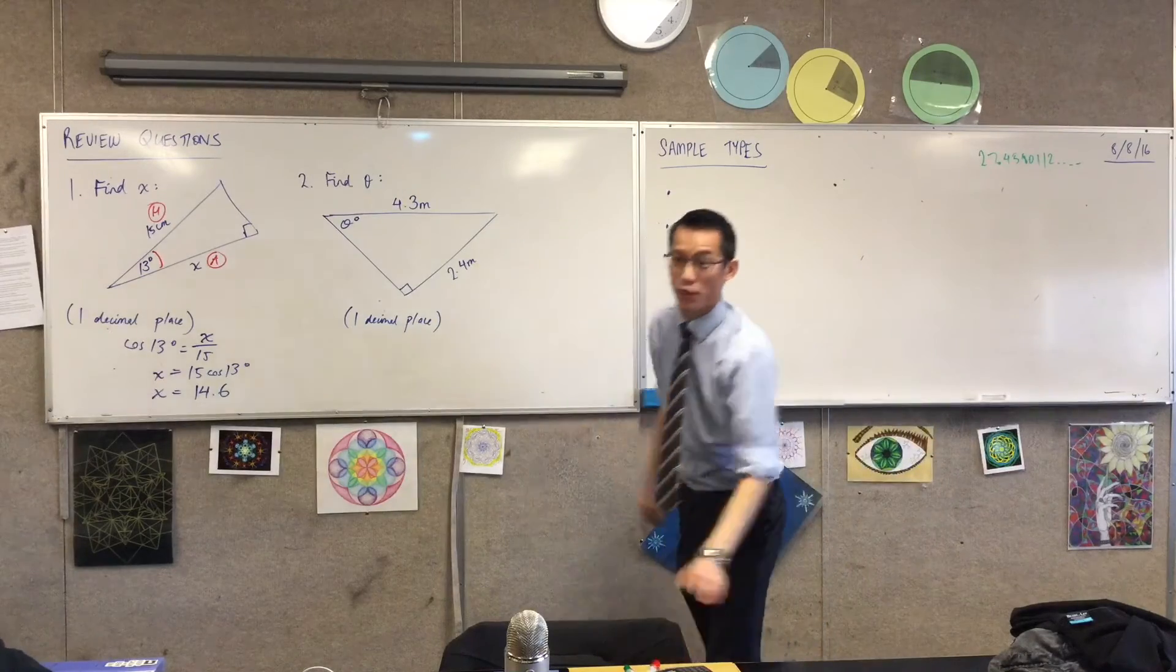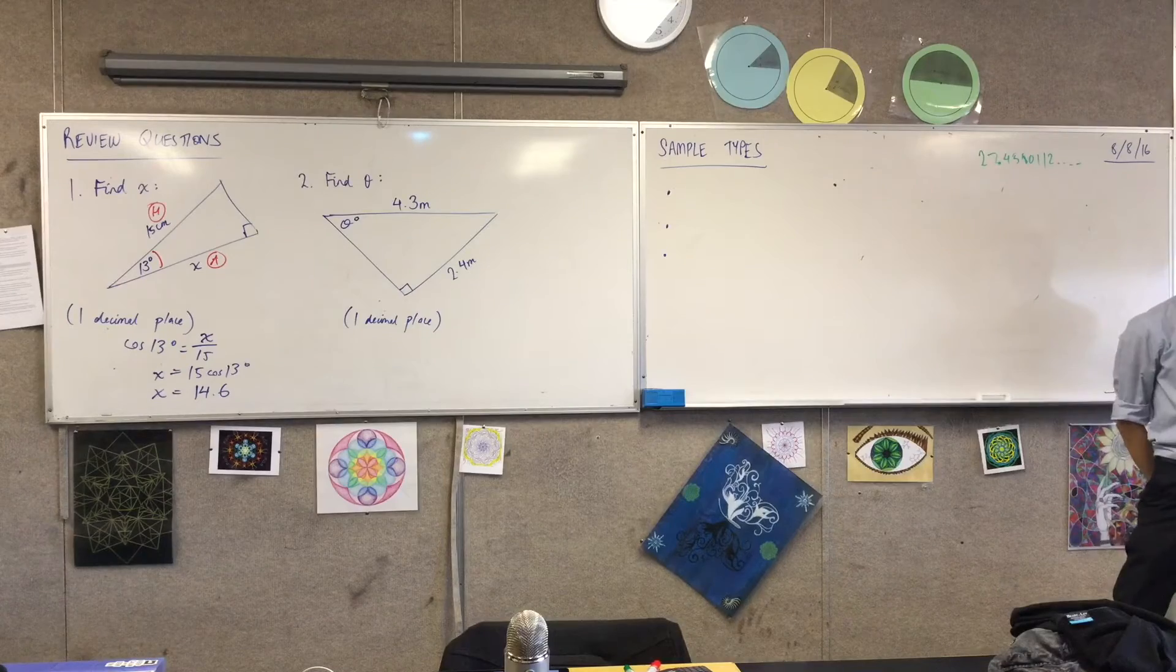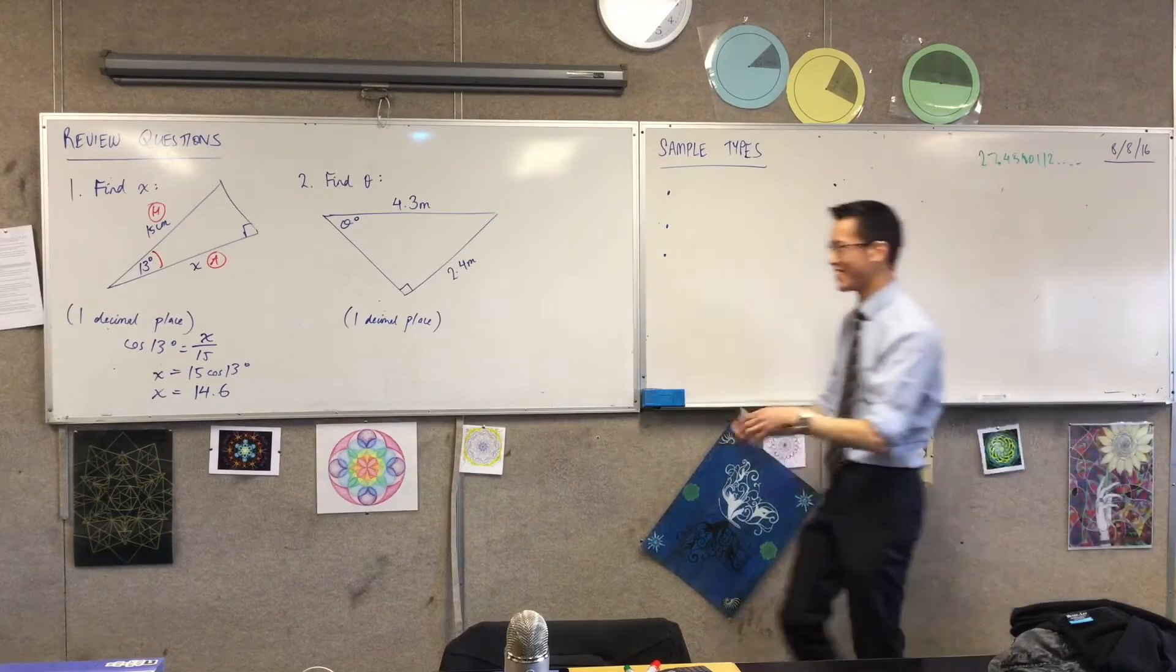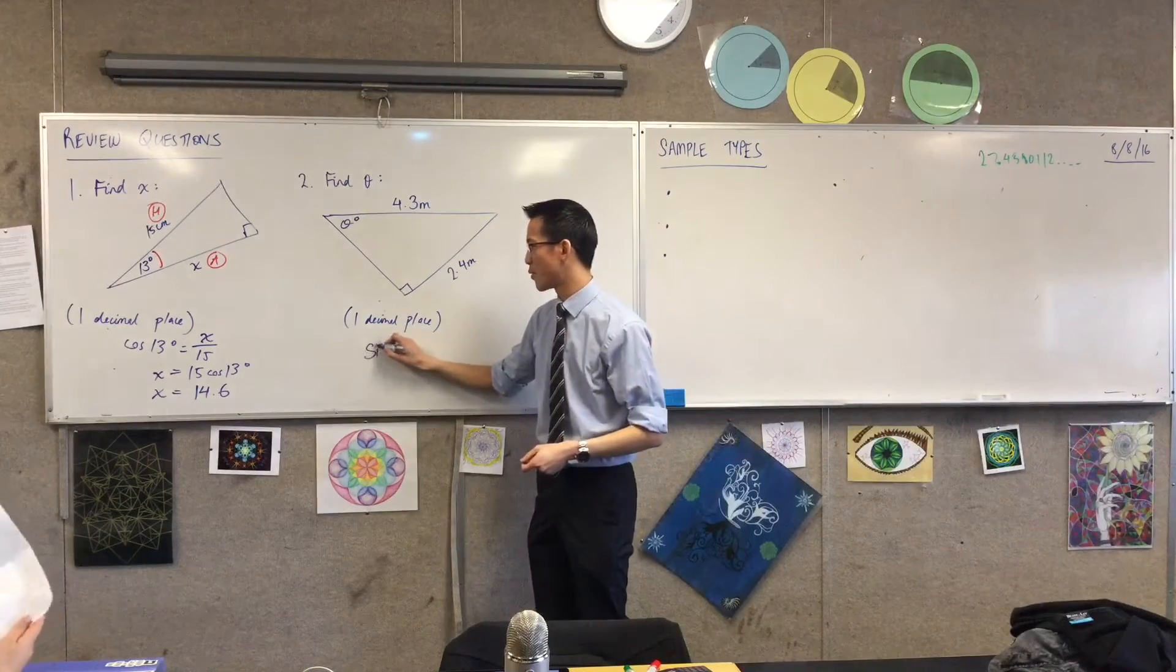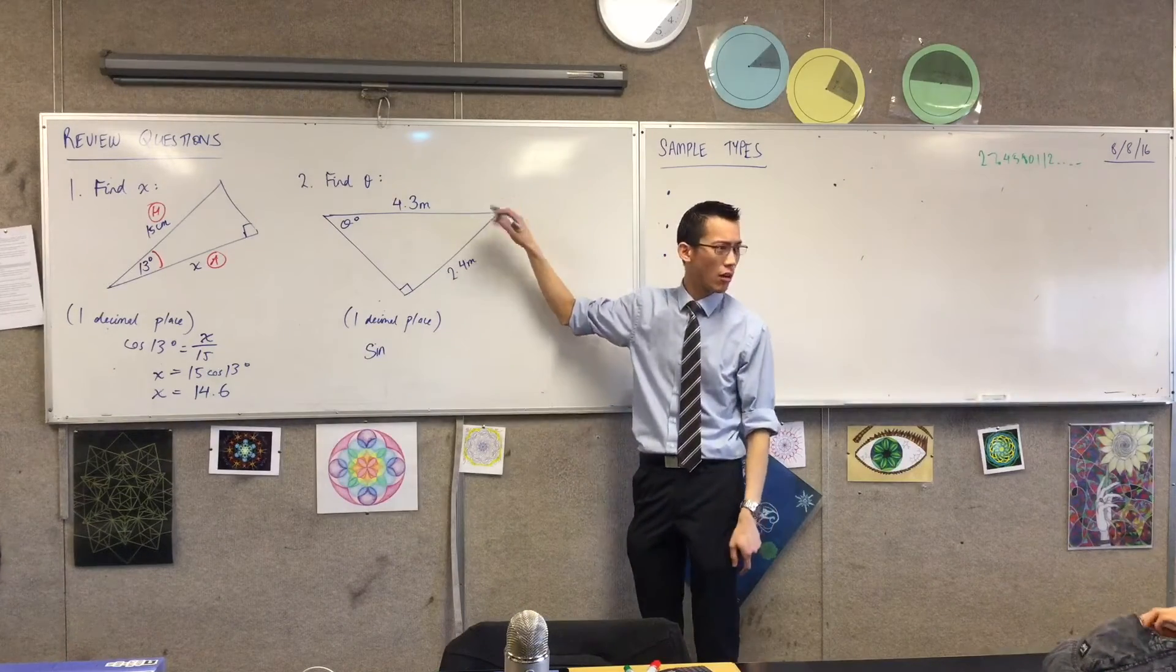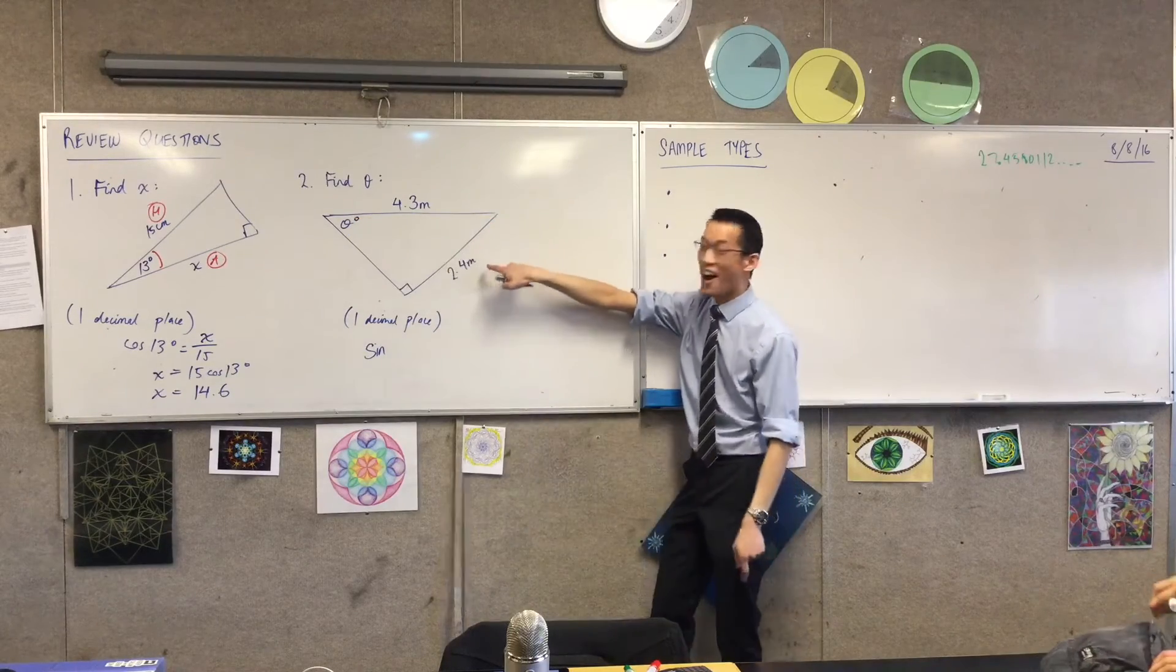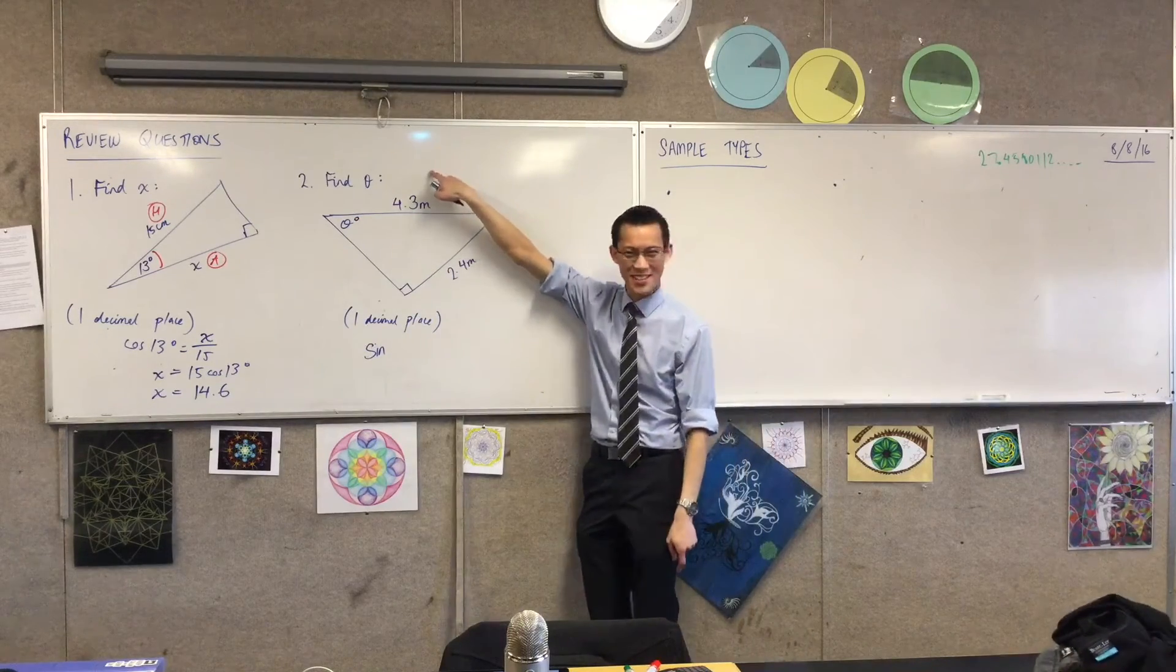Alright, again, our first line of working for this next one. What could we do? Sine. Again, I won't write it this time, but how did you know it was sine? How can you tell? Opposite. Did someone say cos? Opposite on hypotenuse. Okay?